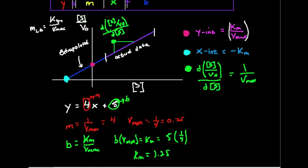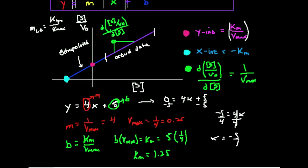Another way to find Km is to find the X-intercept. The line intersects the X-axis when Y is 0. So I take the regression line, set Y to 0: 0 equals 4X plus 5. Subtract 5 to get negative 5 equals 4X, then divide by 4. The X-intercept is negative five-fourths, and since the X-intercept equals negative Km, Km is five-fourths or 1.25 — the same answer.